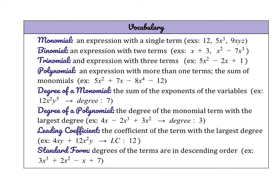We do have quite a bit of vocabulary for today. A lot of this vocabulary might be already familiar to you, so I'll kind of breeze through it. We are talking about polynomials today, but first there are some specific types that have special names. A monomial is an expression with a single term — like 12, or 5x cubed, or 9xyz. There can be multiple variables or just a number, but there cannot be any addition or subtraction — so single terms.